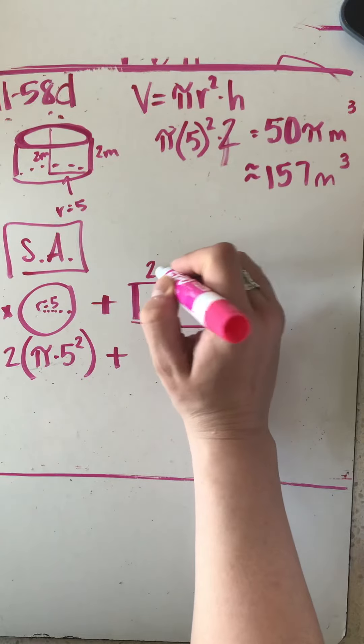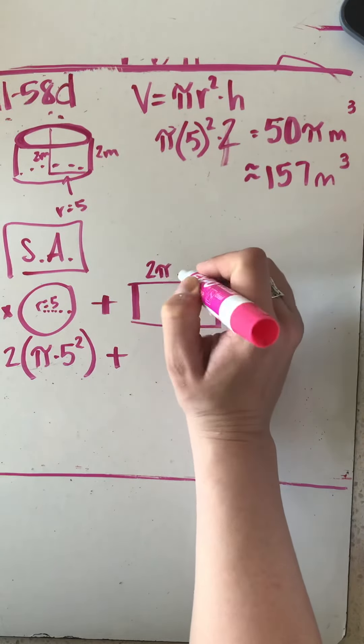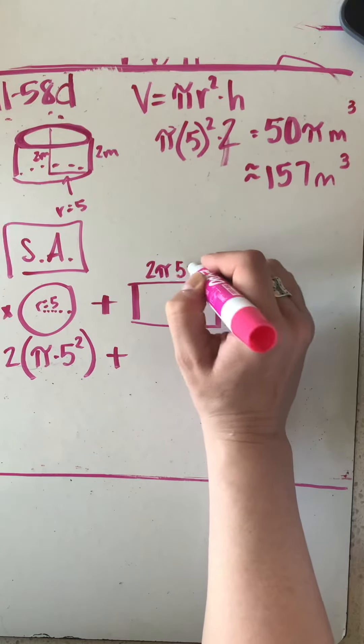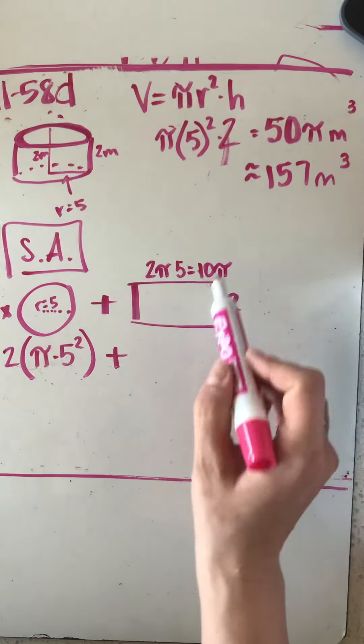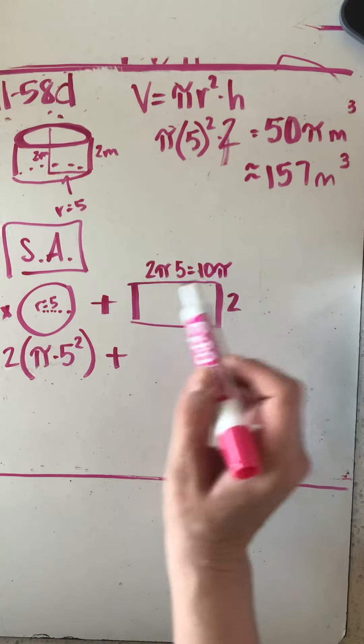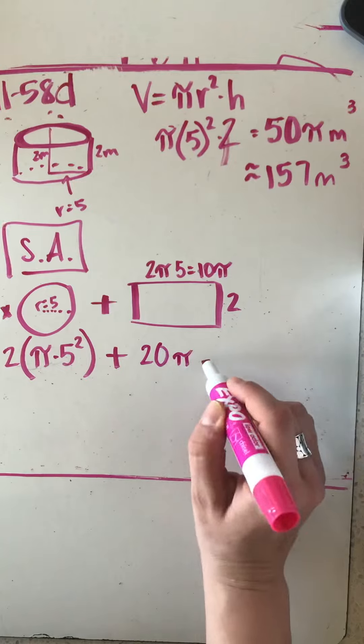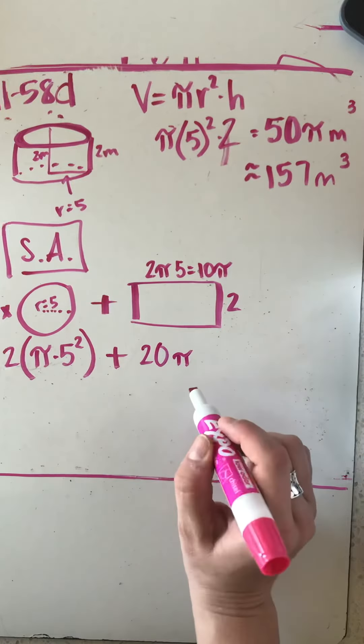If the radius is 5, 2 times π times 5 equals 10π. So the area of this, the lateral surface area, 10π times 2 is 20π. Add those together and you're going to get an answer of 70π.